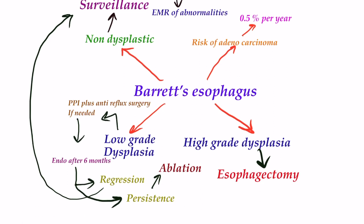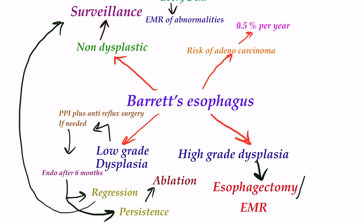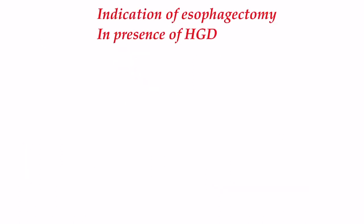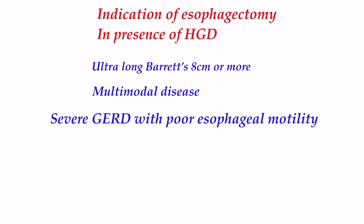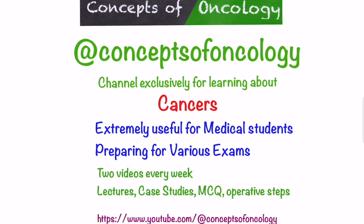For high-grade dysplasia, classical treatment is esophagectomy, but now endoscopic mucosal resection is commonly done. Consider esophagectomy in patients with ultra-long Barrett's segment, when multifocal disease is present, or in patients with severe GERD especially in the setting of poor esophageal motility and large hiatal hernia. An important point is that the presence of Barrett's itself is not an indication for surgery — it is the presence of dysplasia and risk of malignancy which makes surgery necessary.